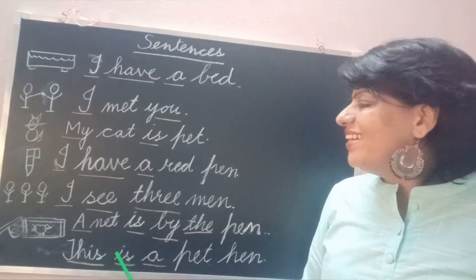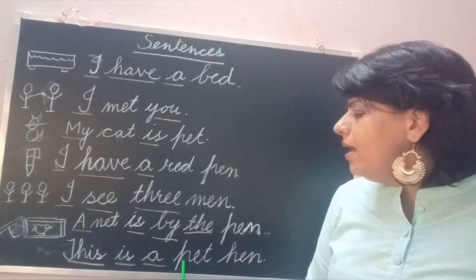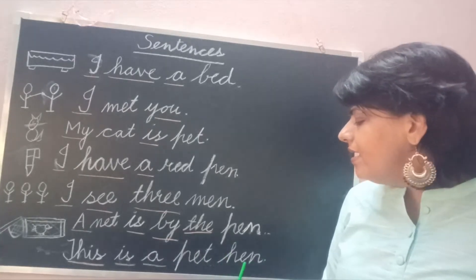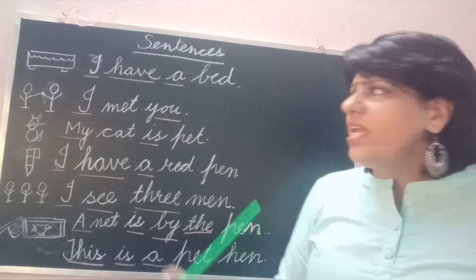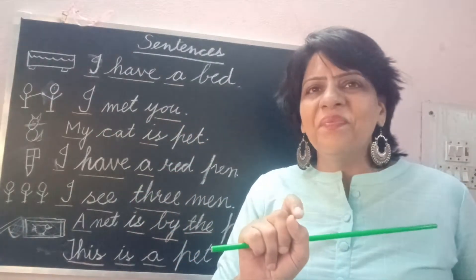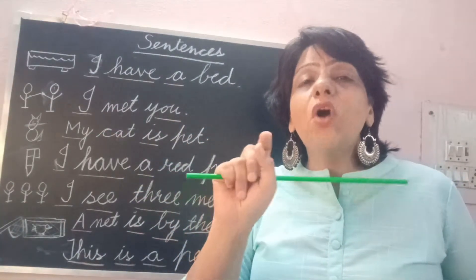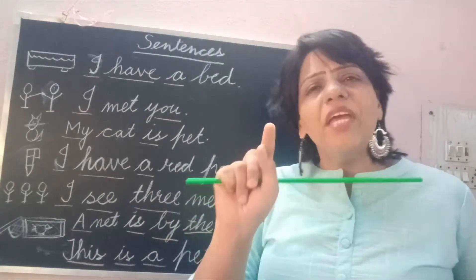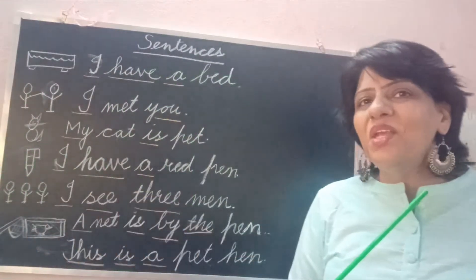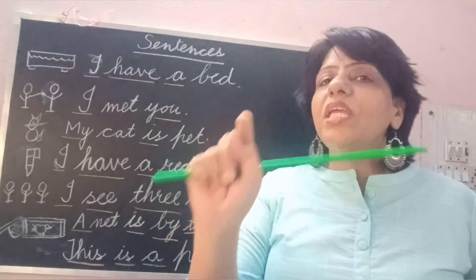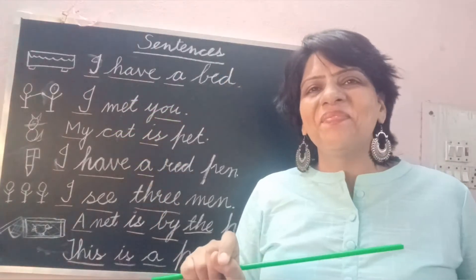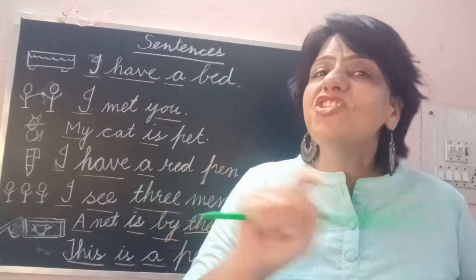This way we can just ask the child to keep the pointer finger under the word — it will increase the concentration level of the child. Wherever he or she is keeping the finger, he or she will read the same word. So just tell your child to keep the finger on whichever word he or she is reading, as it will increase their concentration level.